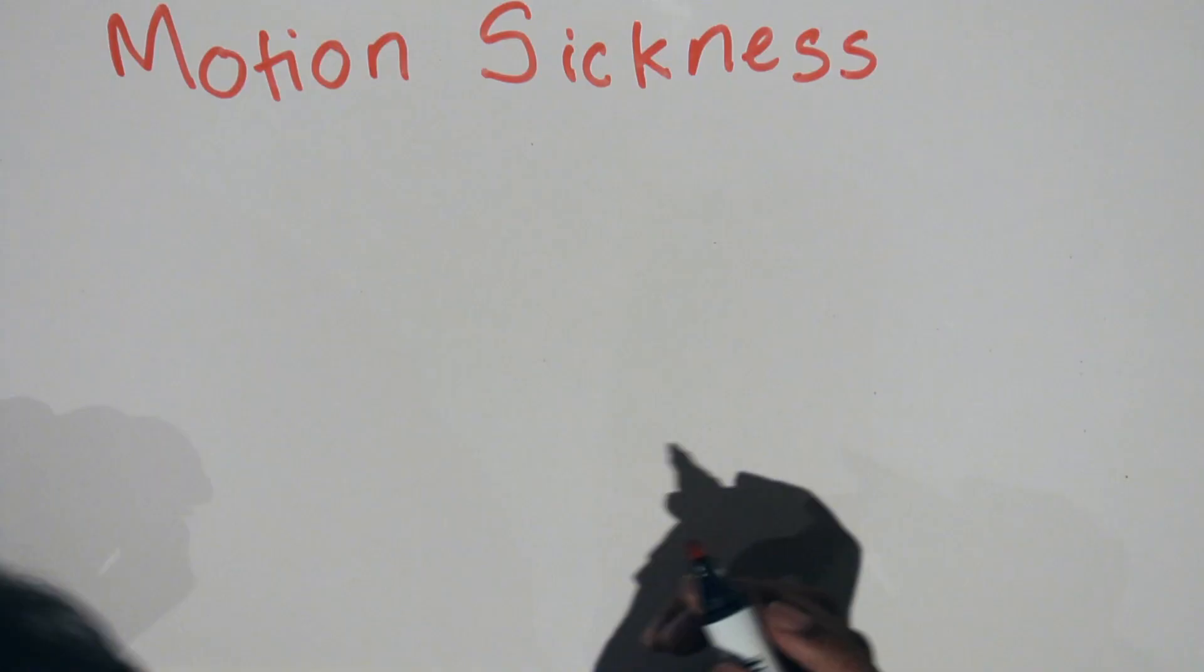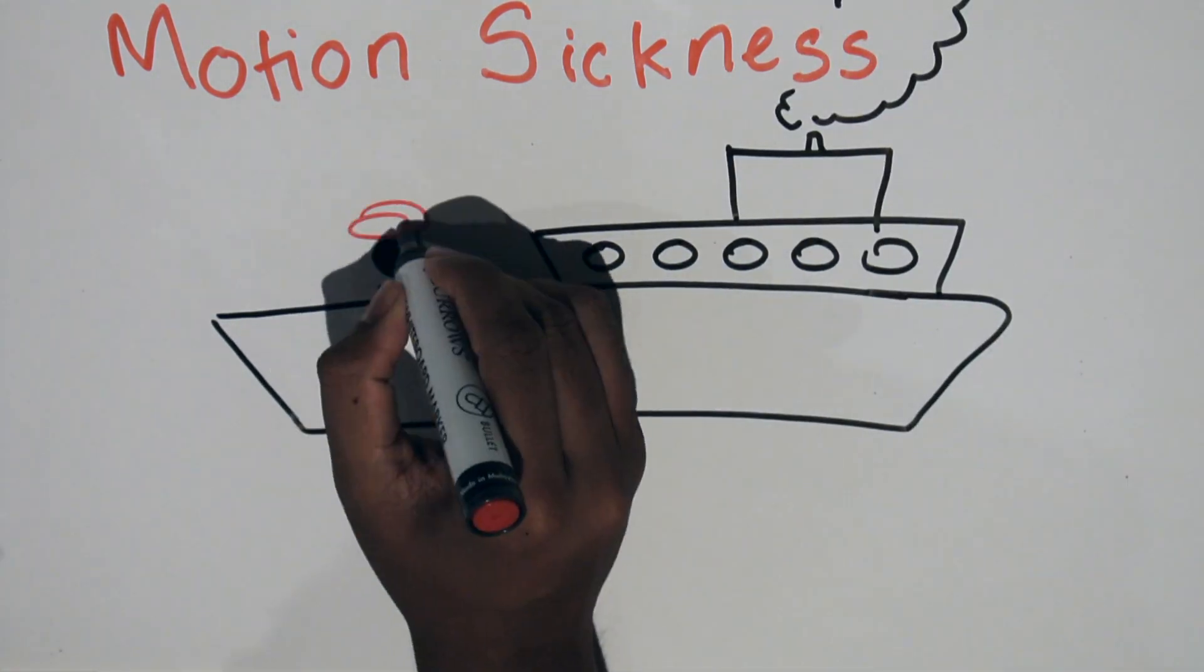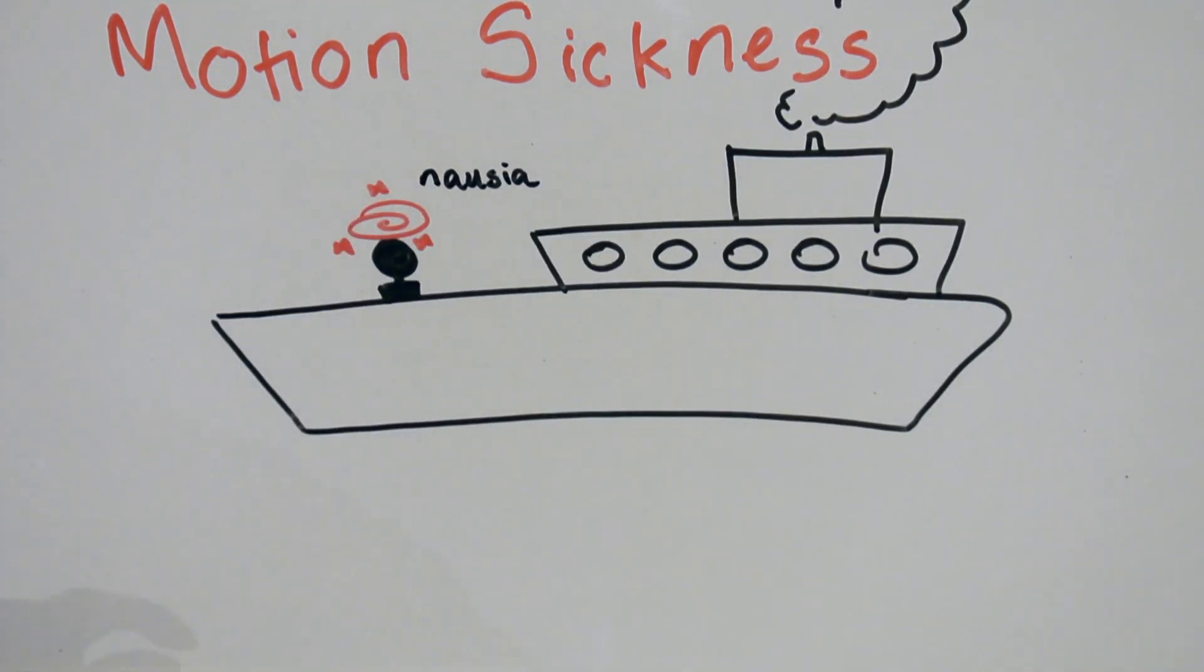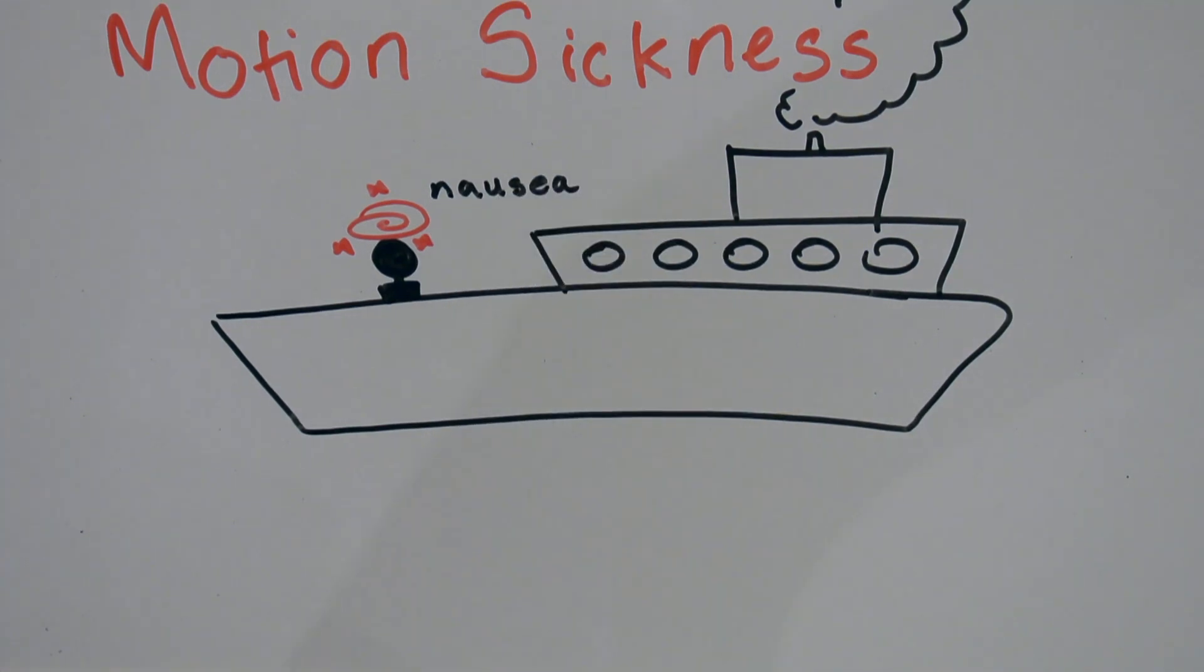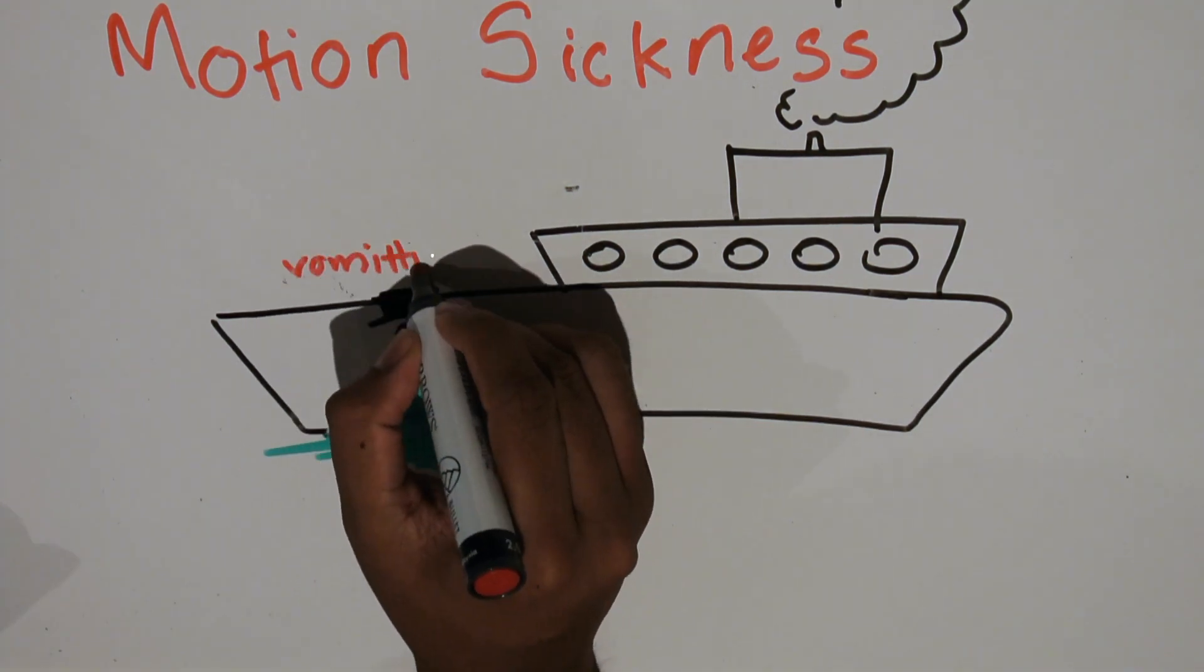When we feel motion sickness, H1 receptors located in the central nervous system send information to the brain, which may induce vomiting and nausea. Once again, we have our H1 antihistamines that block these receptors and stop us from wanting to vomit, for example during a boat trip.